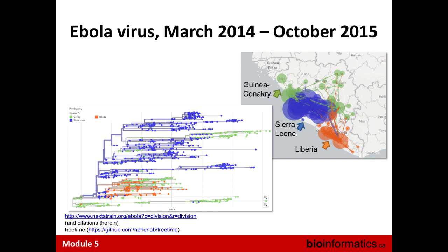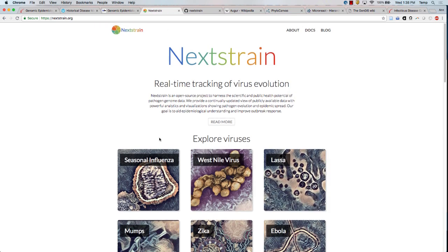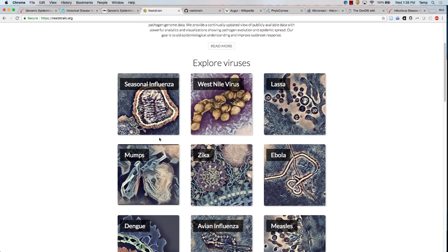This tool is called Nextstrain. It recently won the Open Science Prize and is developed by Trevor Bedford and his team at the Hutch Institute. What this visual is showing is the spread of the Ebola virus during the 2014–2016 outbreak in West Africa. Rather than just showing you the picture, I want to show you the full tool and the way that you can interact with this information to understand what is going on in an outbreak.